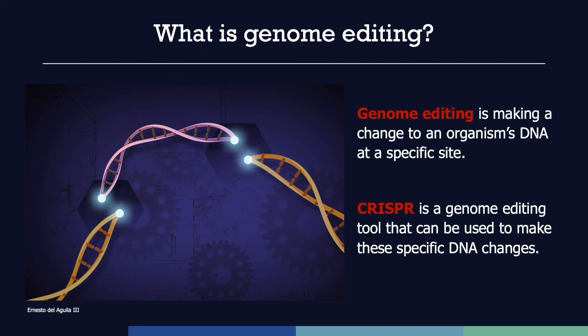But first things first, what is genome editing? Genome editing is a type of genetic engineering used for making specific and targeted changes to an organism's own DNA. One of the genome editing techniques that has generated the most excitement due to its efficiency and ease of use is called CRISPR. Originally discovered in bacteria, CRISPR is now being used as a tool with applications in many areas, including medicine, agriculture and the environment. For more information on the use of CRISPR and related genome editing tools in human health, please see PGED's lesson plan, Genome Editing and CRISPR.